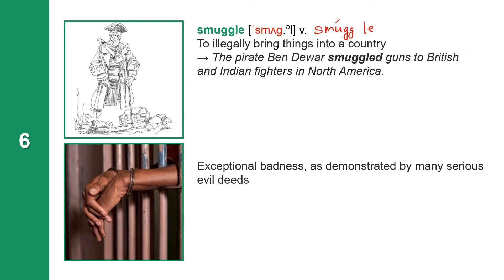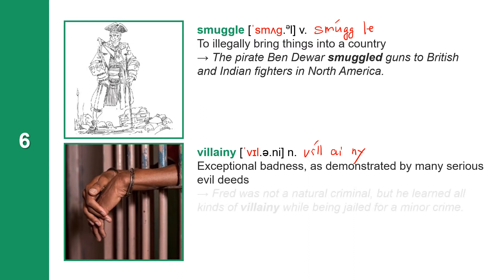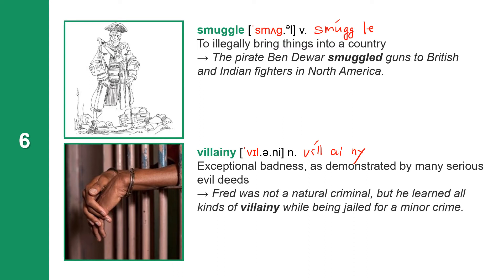The last word means exceptional badness as demonstrated by many serious evil deeds. The word is Villainy. Villainy is a noun. It has three syllables. Fred was not a natural criminal, but he learned all kinds of villainy while being jailed for a minor crime.